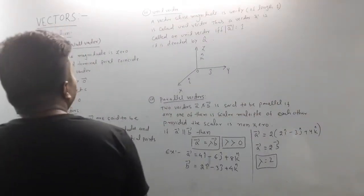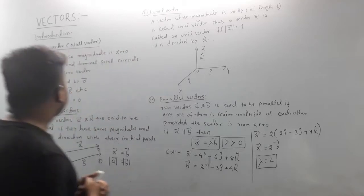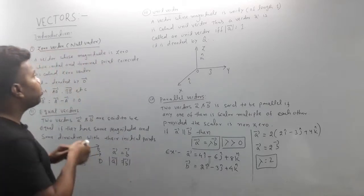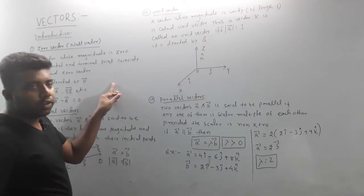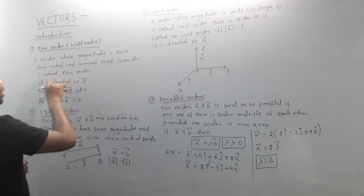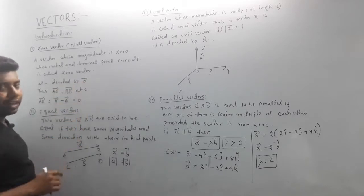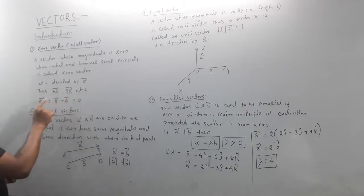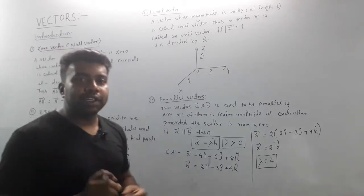Now let's look at the types of vectors. The first type is the zero vector. A zero vector has magnitude zero — if you have a dot, the magnitude is zero. A vector whose magnitude is zero and whose initial and terminal point coincide is called a zero vector.